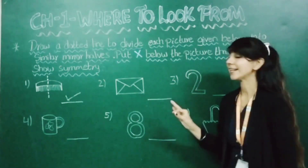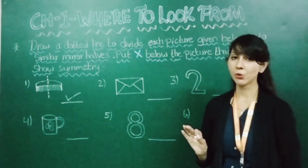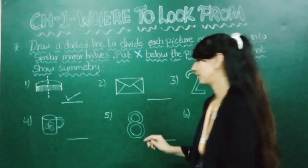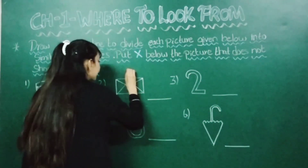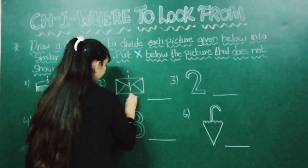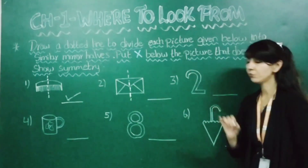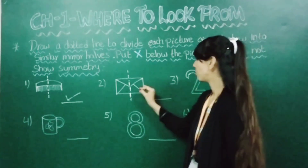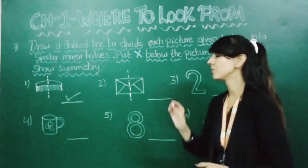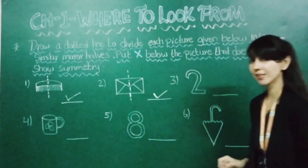Moving to the next picture — this is an envelope. We will draw a dotted line through it. Both sides are equal, so this also shows symmetry. We will put a tick here.